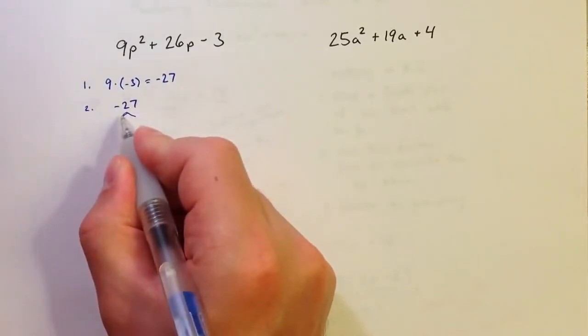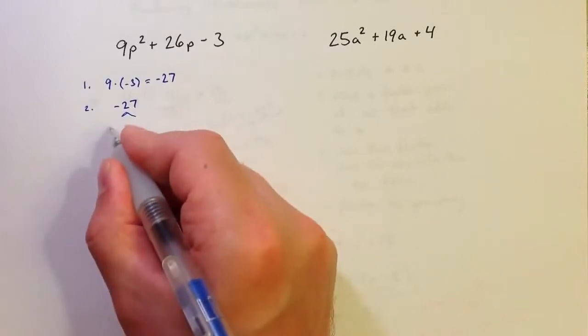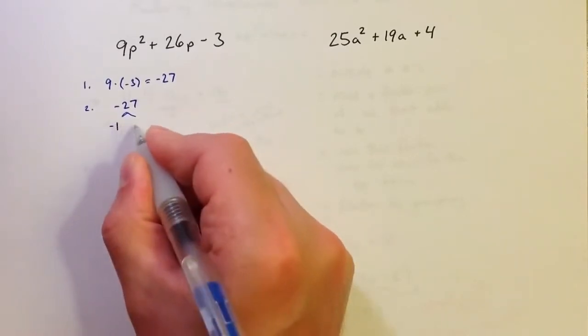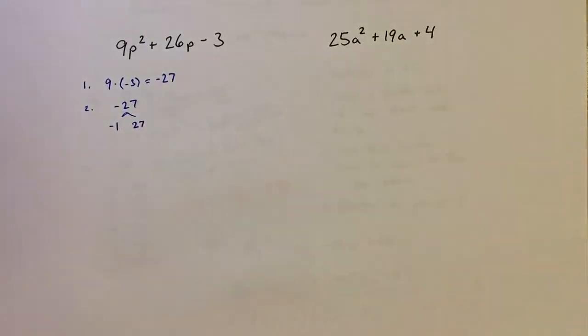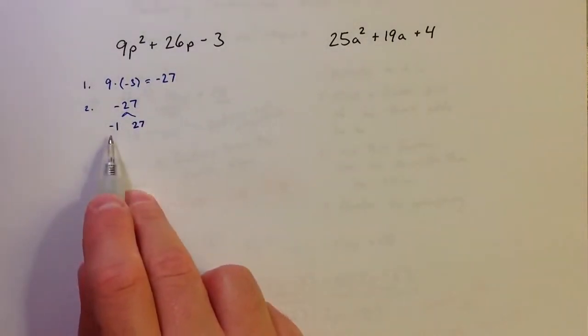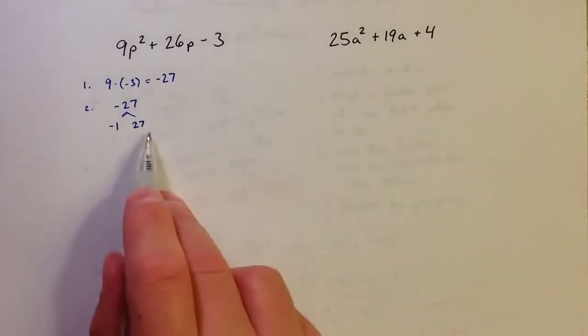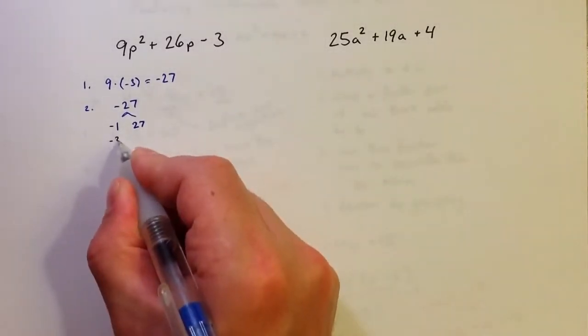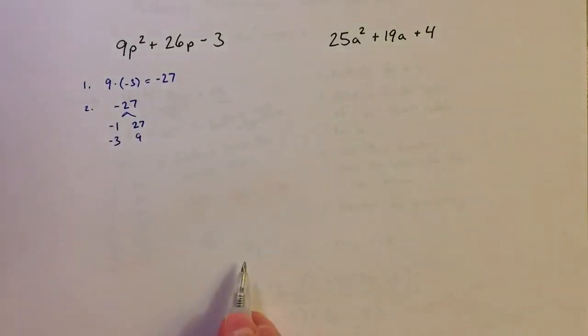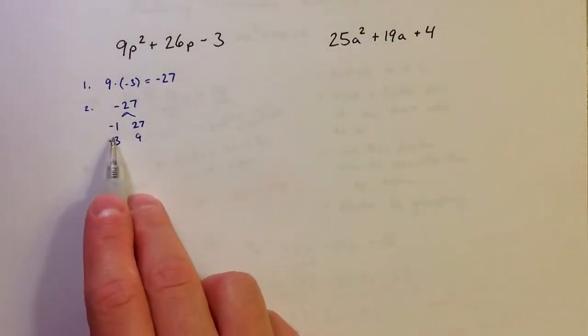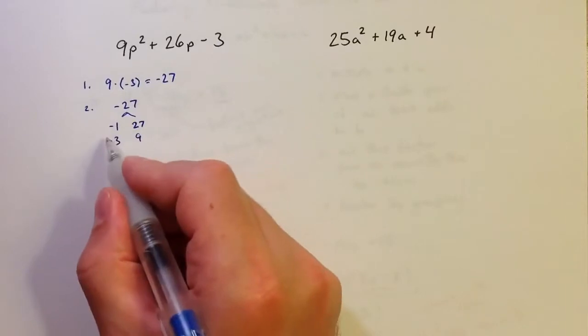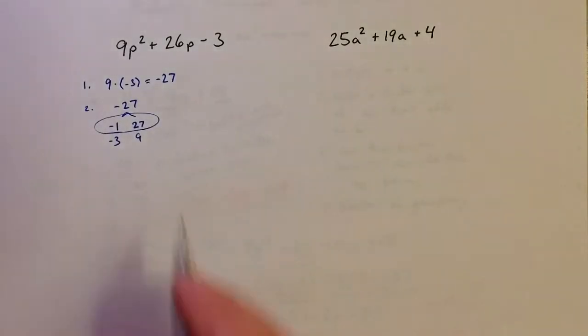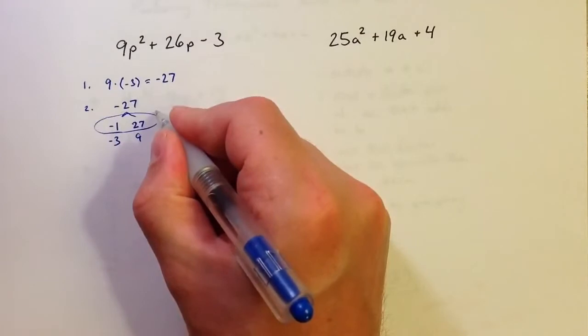And I'd like to find a factor pair of negative 27 that adds to equal positive 26. So since I want to find a negative value, I know that one number needs to be negative and the other needs to be positive. And because I want them to add to be a positive 26, I know that the smaller factors should be negative so that when I add them together, I get a positive result. Negative 1 and positive 27 is the one that I want because if I add those up, I get a positive 26.